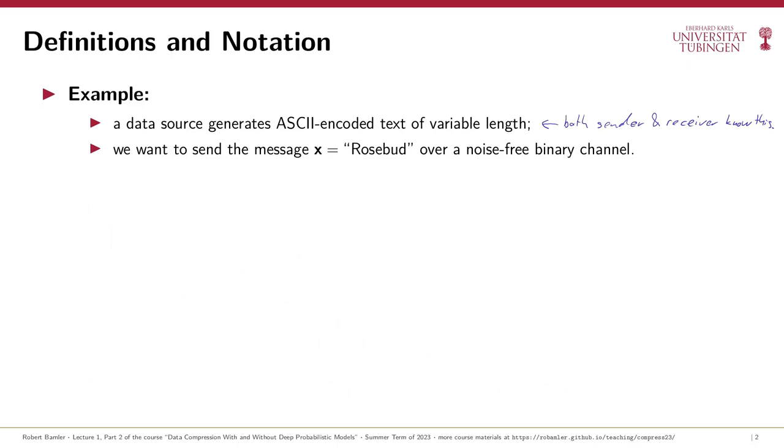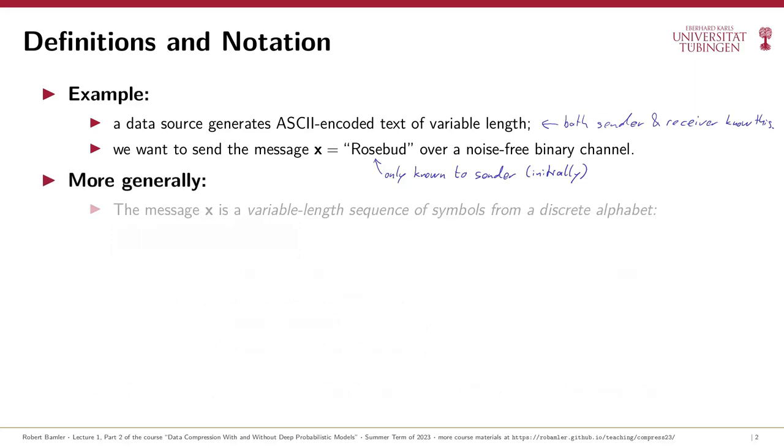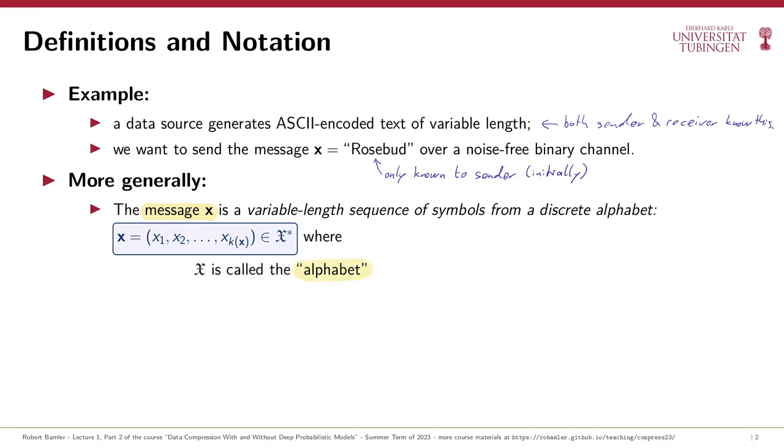Then, once sender and receiver have agreed on a compression method to use for this kind of data, the sender picks some specific message, let's say the word rosebud, and the sender is now tasked with encoding this message in some way so that she can send it over some noise-free channel that, let's say, can only transmit bit strings. Let's generalize and formalize this problem setup. We'll denote by boldface x a message, and we assume that the message is a variable length sequence of so-called symbols. That's summarized in this blue highlighted equation, and here the gothic letter X is called the alphabet. The alphabet is a discrete set of all possible symbols, and it is known to both the sender and the receiver before the communication starts.